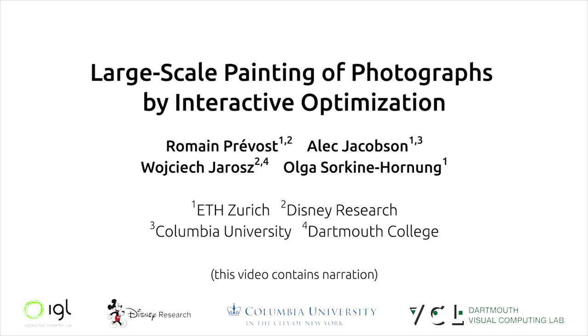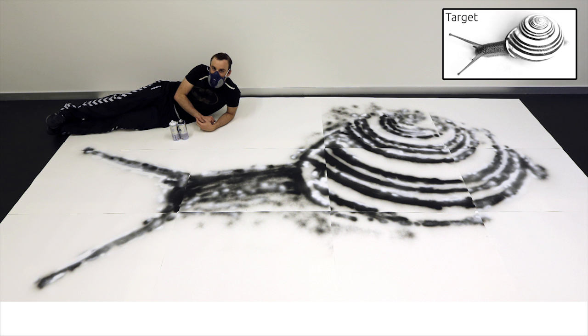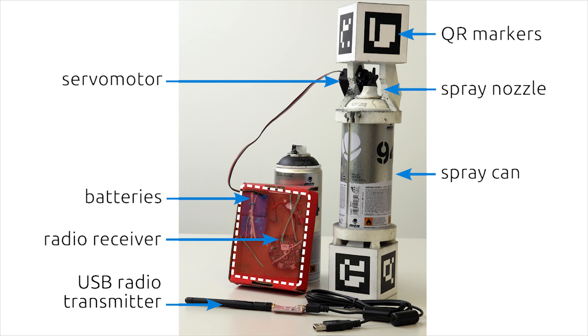We present a system that assists novice users in spray painting large-scale paintings from input photographs. Our prototype device mounts on top of a standard spray can and enables programmatically actuating the spray can.